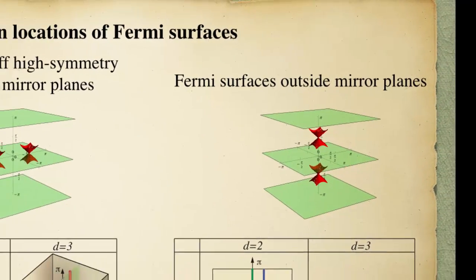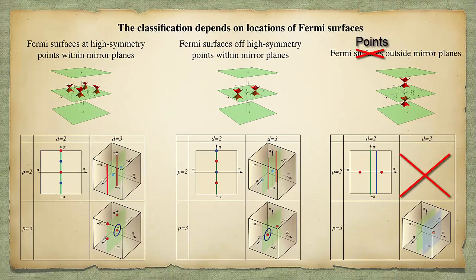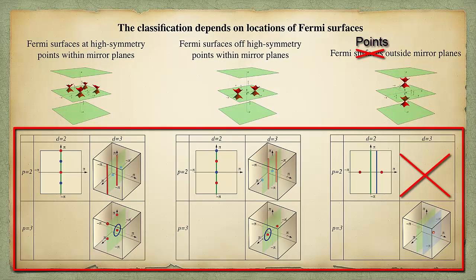In this third case, the classification is valid only for Fermi points; Fermi lines or higher-dimensional Fermi surfaces won't work. These three figures below show Fermi surface locations in different spatial dimensions D and codimension P. Red regions represent Fermi surfaces. Blue regions are for the definition of the topological invariant. The detail of the invariant is in our paper.